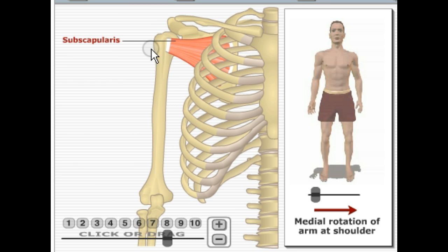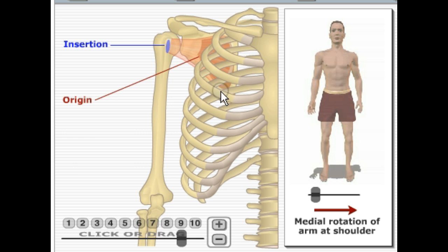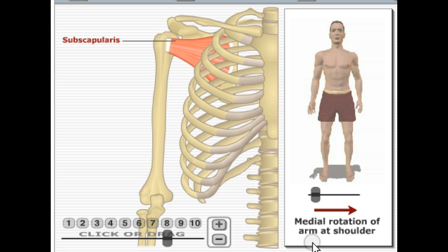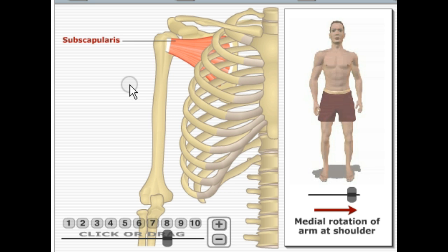Here is subscapularis. It's going to originate on the subscapular fossa of the scapula and insert on the lesser tubercle of the humerus. Its main action is to medially rotate the arm at the shoulder. This is the last muscle in the rotator cuff muscles, which includes subscapularis, supraspinatus, infraspinatus, and teres minor.